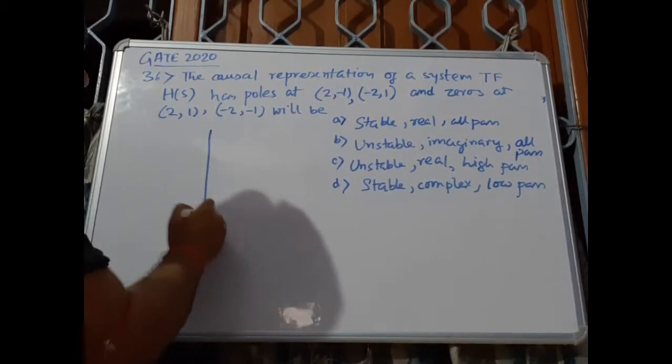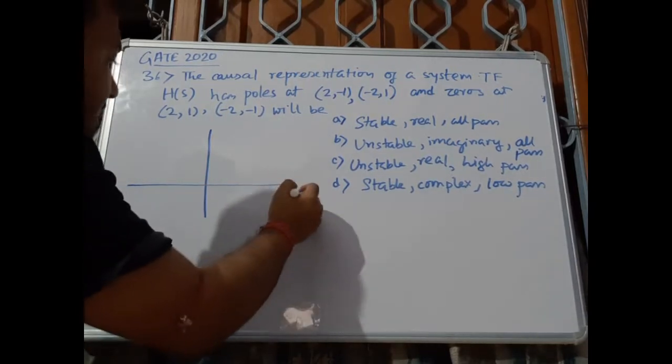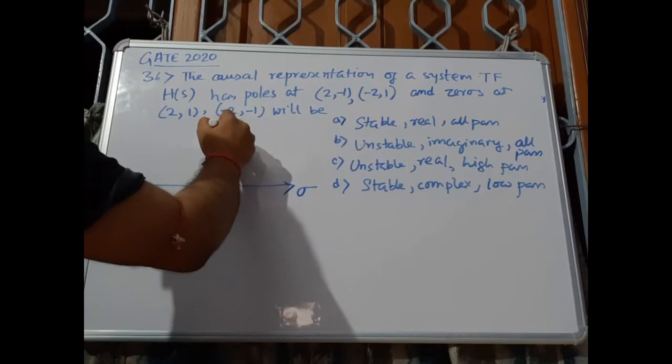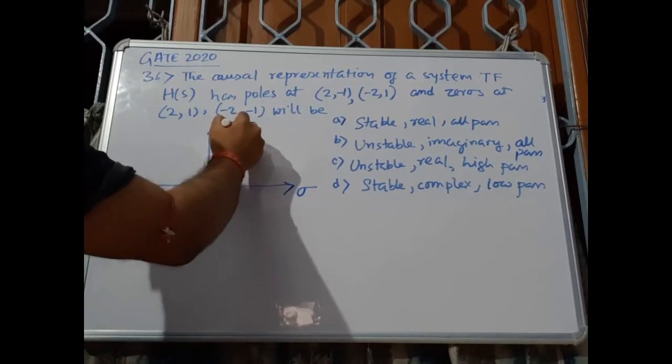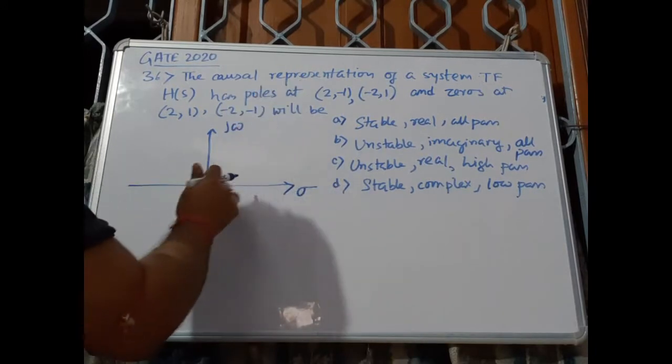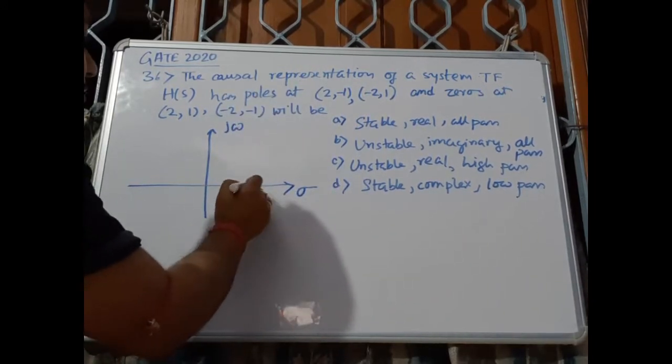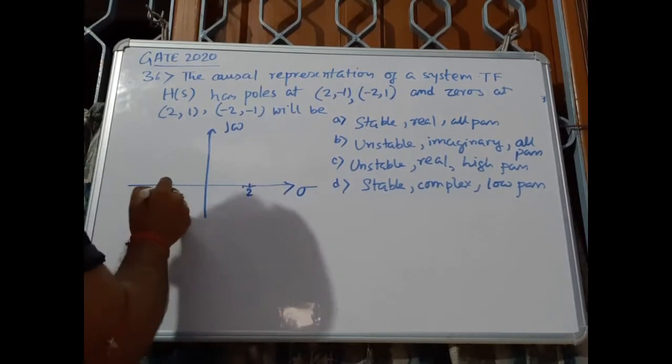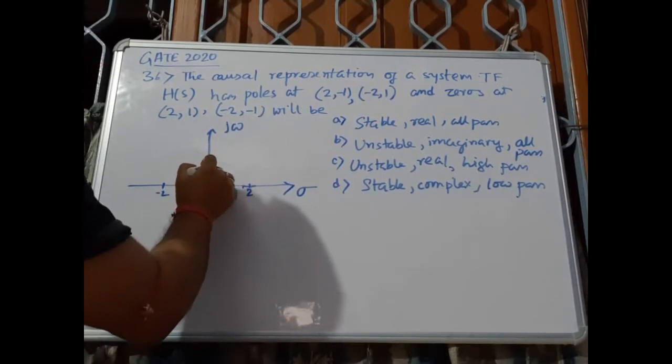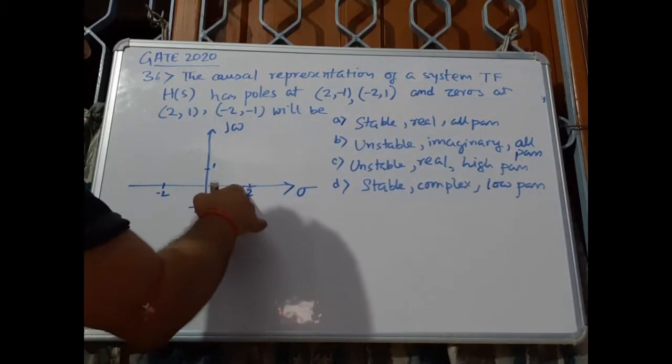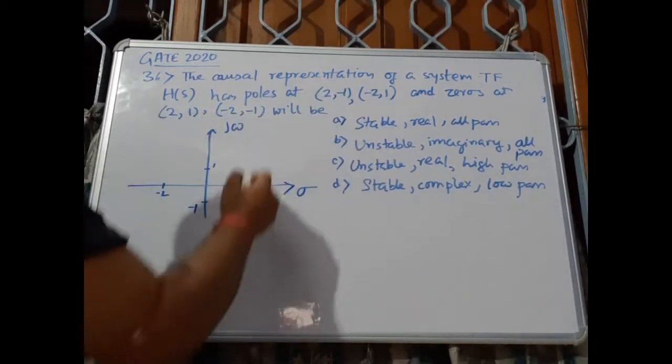What are the poles? If I draw the s-plane, the real axis has Sigma and the imaginary axis has j Omega. We have poles at this location - this is 2, this is -2, this is 1, and this is -1.